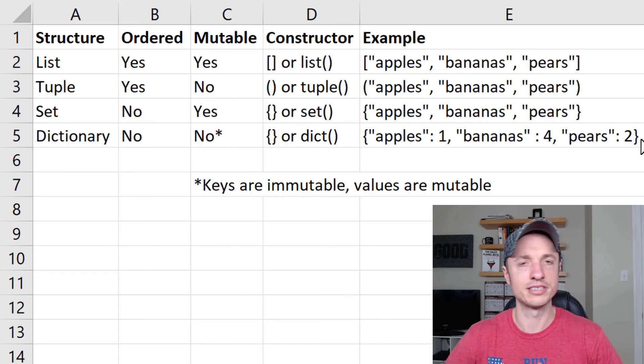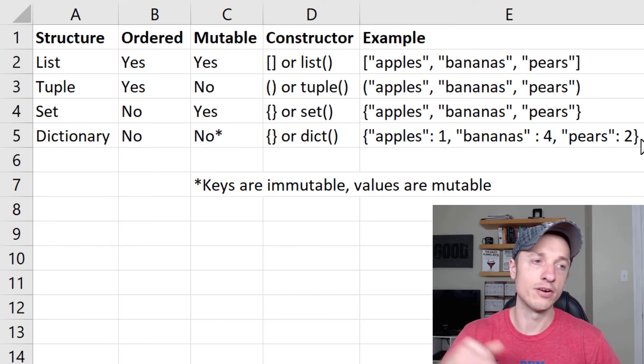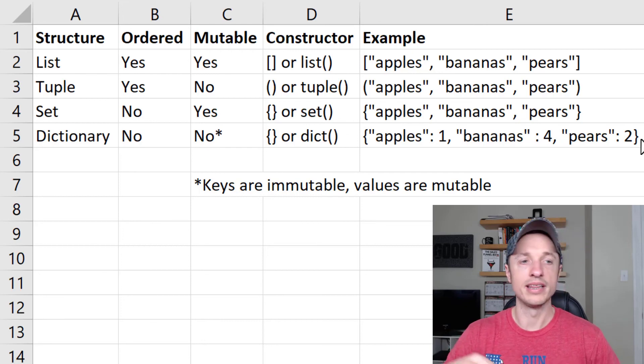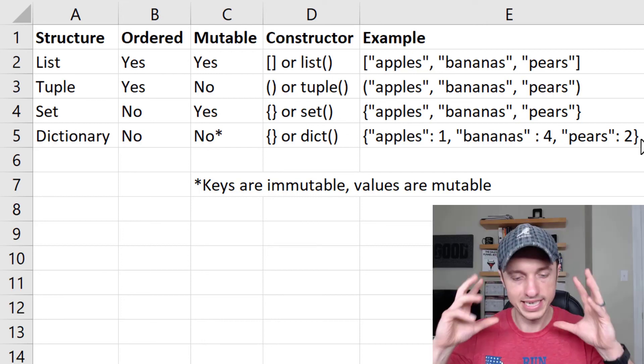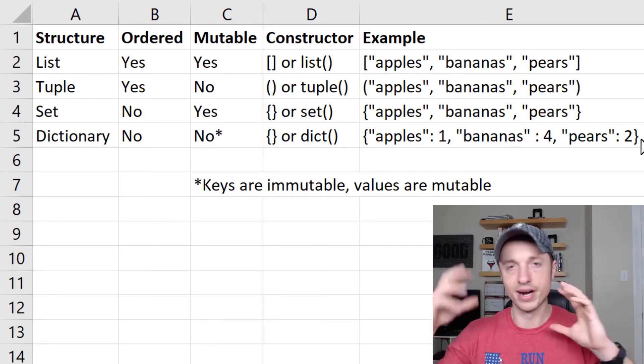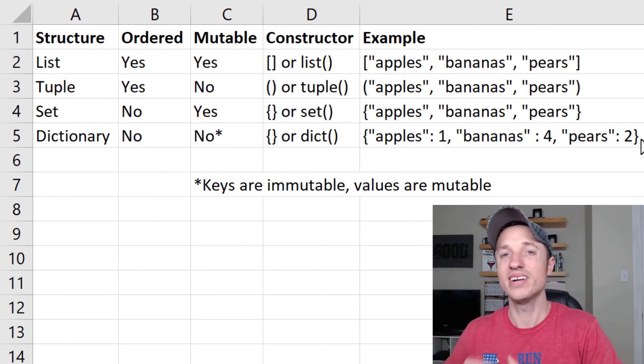So dictionaries are interesting. And of course, we're going to cover them in great detail in the dictionaries video. So that's it. I just want to do a brief overview of the structures we're going to be going over, talk a little bit about ordered and mutable and the constructors and so on. So you've seen it and hopefully things start going around in your head. And as we go through some practical examples in the following videos, it's going to make sense what ordered means, mutable means.